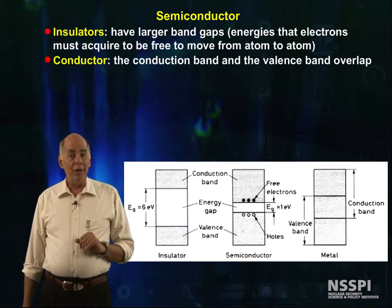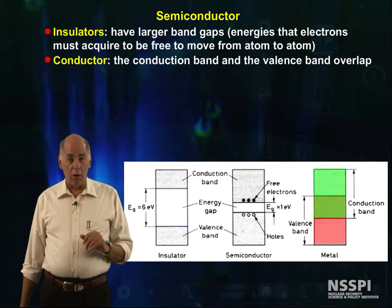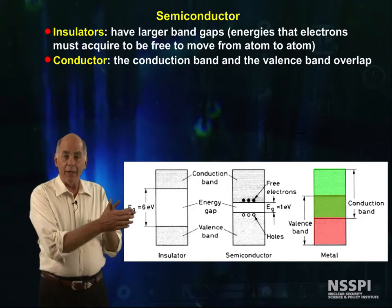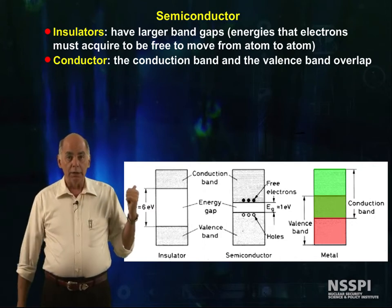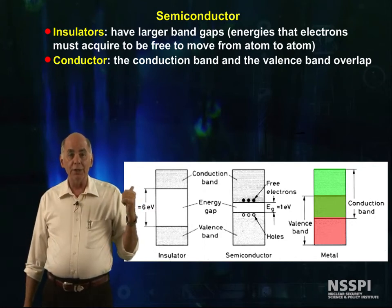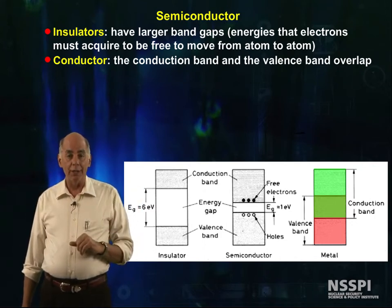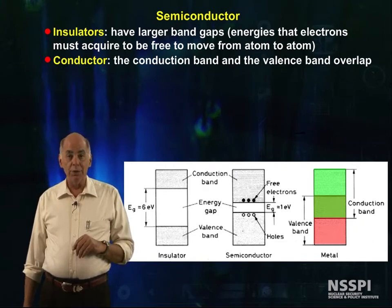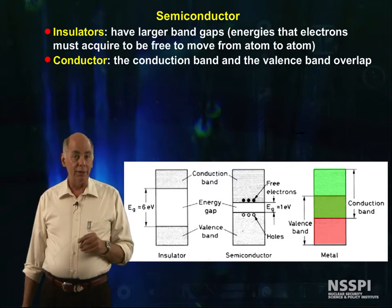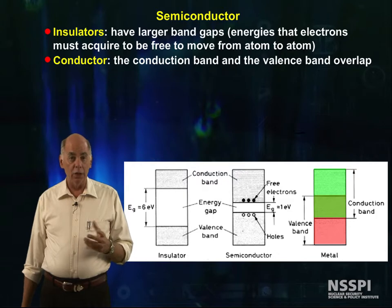There are some materials — almost all metals, for example — where the conduction band and the valence band overlap, as shown here. This means that there are always free electrons that can move from atom to atom easily. These materials are good conductors of electricity and good conductors of heat. Examples would be aluminum, copper, silver, and gold.